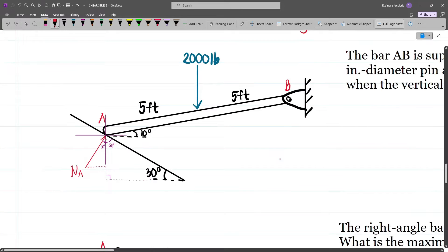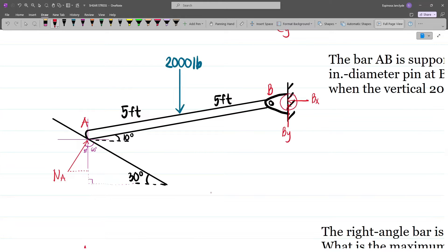Now at B, we have a vertical reaction and a horizontal reaction. Let's label this as Bx and By. Now ideally, I will first take moments about B because at B I have two unknowns, Bx and By. And so let's take moments about B.